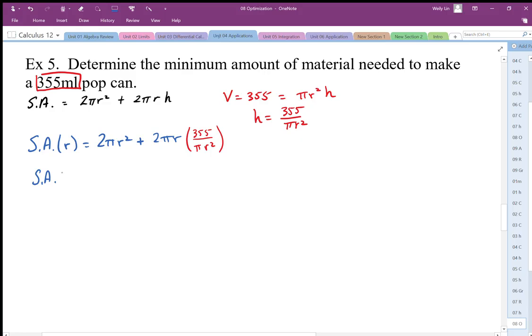My surface area as a function of radius is 2πr² plus 710 over r. That's 2 times 355, the π's cancel out, the r's cancel out, and I end up dividing by r. Now that I have the surface area equation in terms of the radius, I can differentiate this with respect to r.